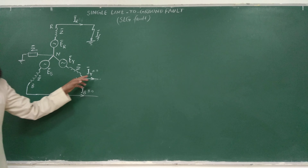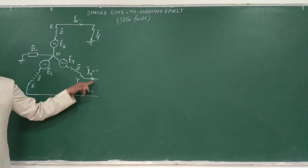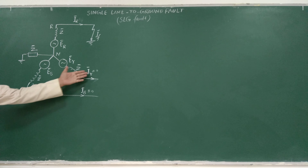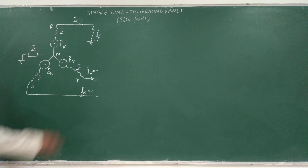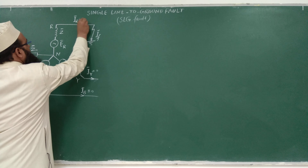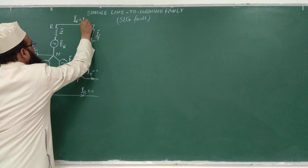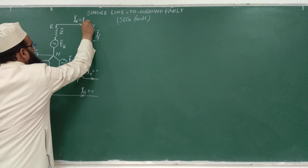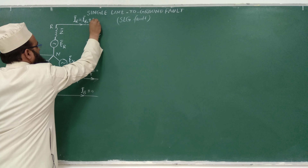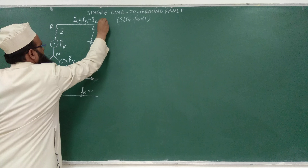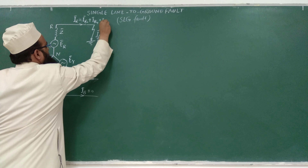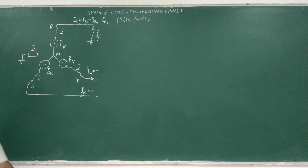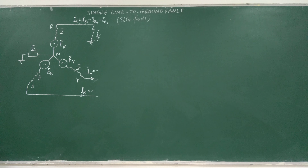Before the occurrence of fault, the currents in the other two phases were zero. Since only single line to ground fault has occurred in R phase, the current IR has three sequence components: IR0, IR1, and IR2. These are the three sequence components of phasor IR. If you still have any doubt, you may ask.